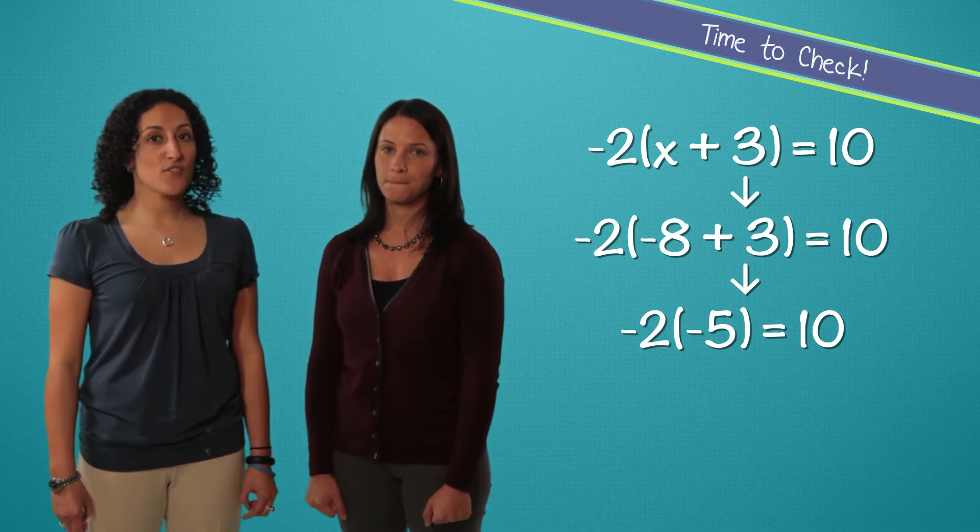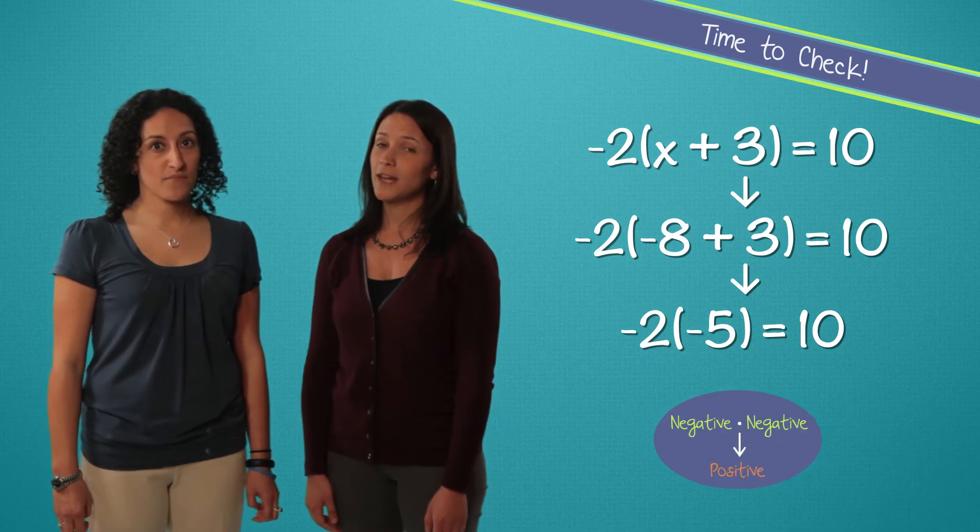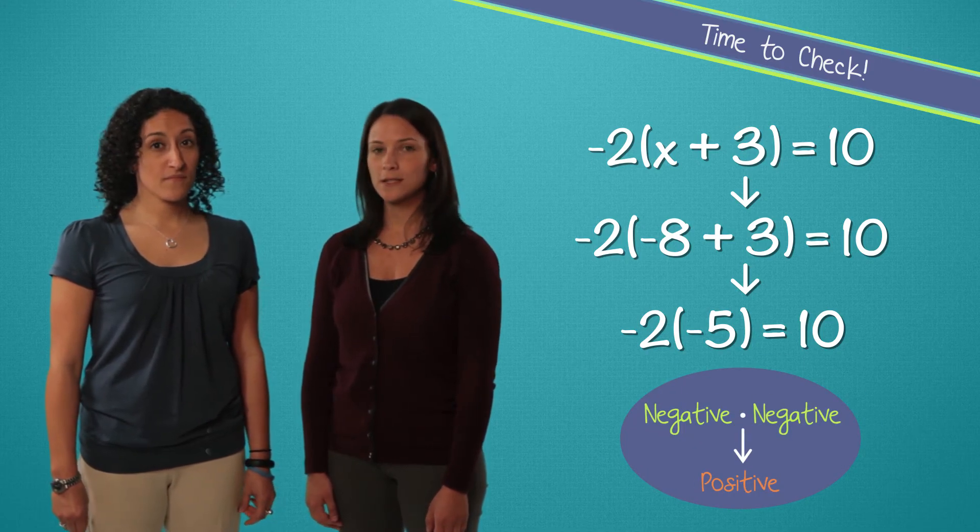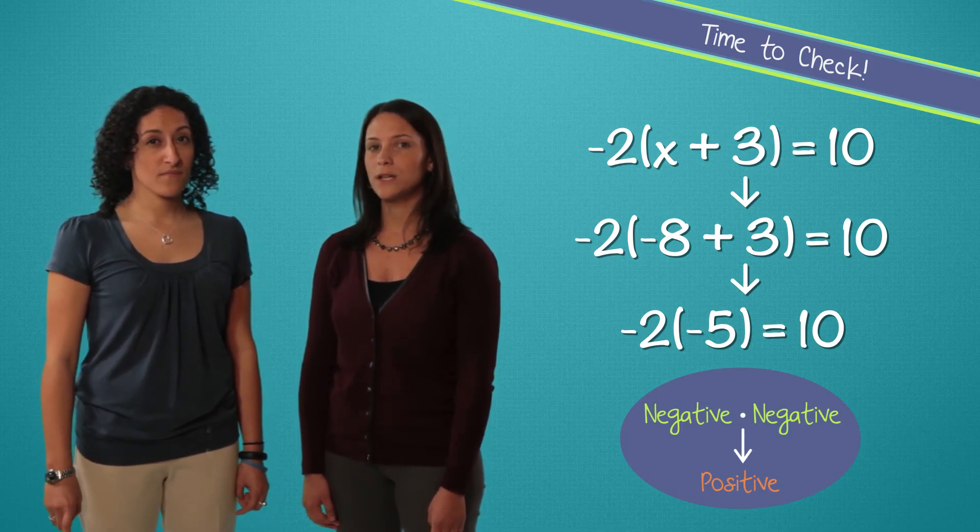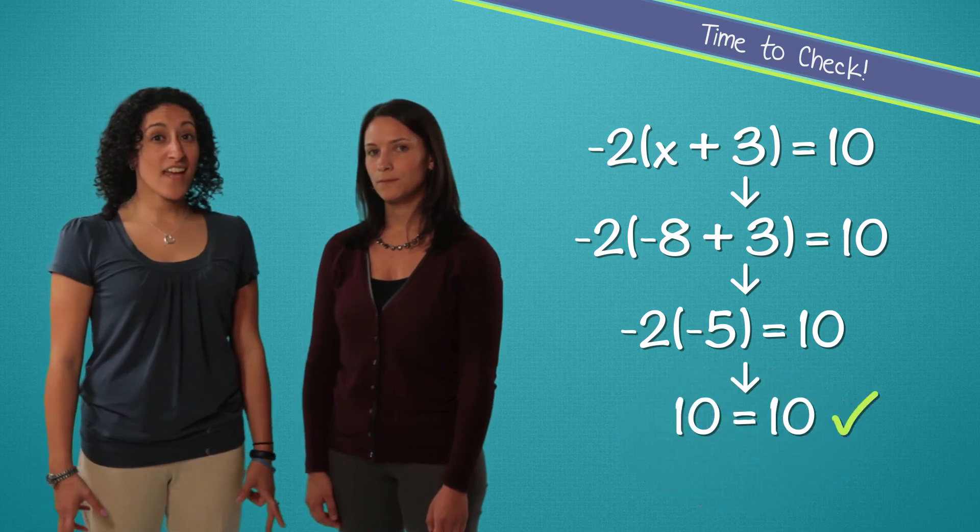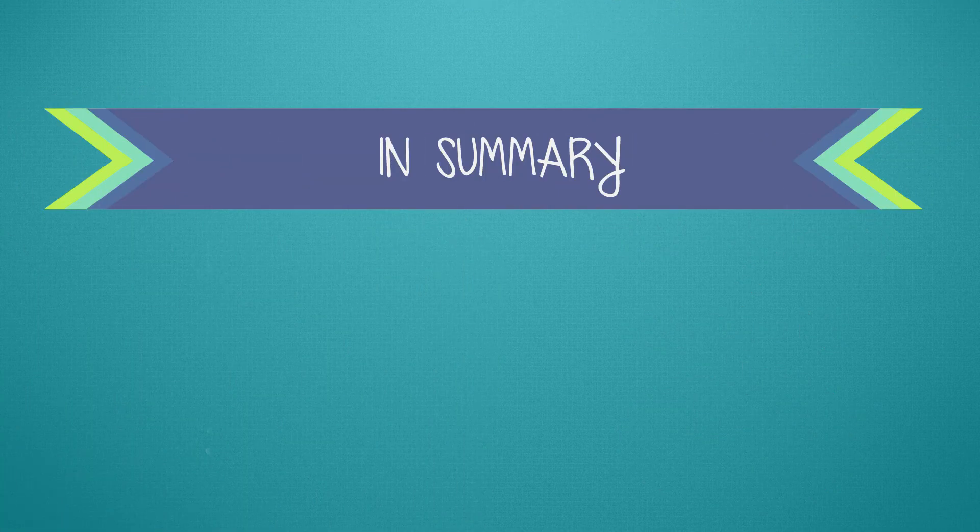Then we have negative 2 times negative 5. A negative times a negative equals a positive. So negative 2 times negative 5 equals 10. 10 equals 10. That checks out. Great.